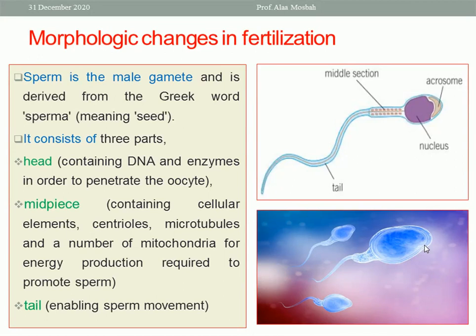Regarding the morphological changes in fertilization: the sperm is the male gamete consisting of a head, middle piece, and tail. The head contains the nucleus and the acrosome. The middle piece contains the mitochondria for energy production required to propel the sperm, along with centrioles and microtubules. The tail enables sperm movement.